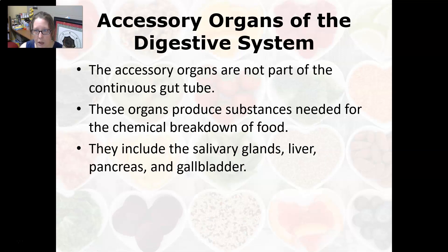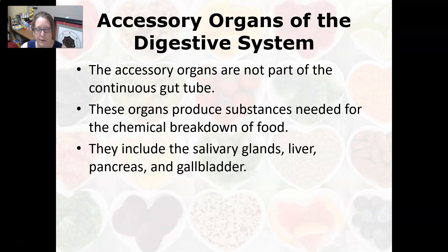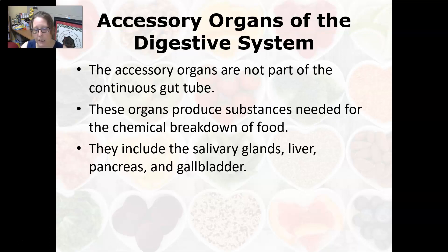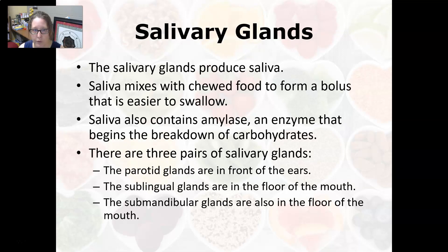The accessory organs are not part of the continuous gut tube but produce substances needed for the chemical breakdown of food. They include the salivary glands, which produce saliva with salivary amylase; the liver, which produces bile to help break down fat; the gallbladder, which stores bile and helps release it; and the pancreas, which releases digestive enzymes that help break down proteins, carbs, and fats.